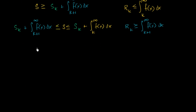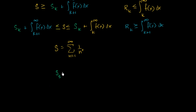Let's say the infinite series we want to apply it to goes from n equals one to infinity of one over n squared. Let's say we didn't know how to find the exact value here, but we want to estimate it using the first five terms. So we'll compute s sub five, which is the sum from n equals one to five of one over n squared.